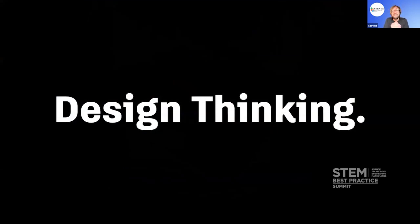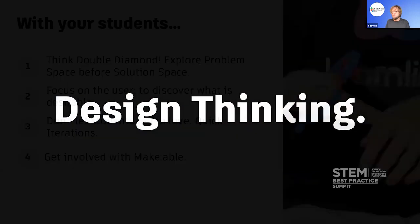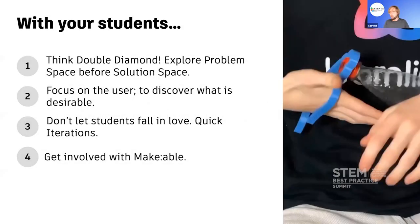So that was design thinking. Design thinking is something which is going to take hours to get involved with, but as a starting point, here are some of the things you can do with your students. Think double diamond—use that and encourage students to explore the problem space before the solution space. Secondly, focus on the user to discover what is desirable. Don't just assume we know what the user wants. Invite users into school, encourage students to go out and video and speak to people and make lists which can then be taken into design method tools, all available on Make.able.